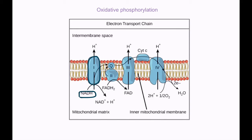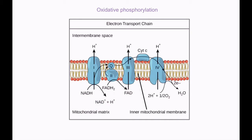First, reduced NAD comes in contact with the dehydrogenase enzyme, which removes hydrogen from it — this is why it's called dehydrogenase. It forms NAD, protons, and electrons. This step is important because without it we won't have NAD, so the link reaction and Krebs cycle can't be completed. We need NAD to carry the released hydrogen and form reduced NAD again.